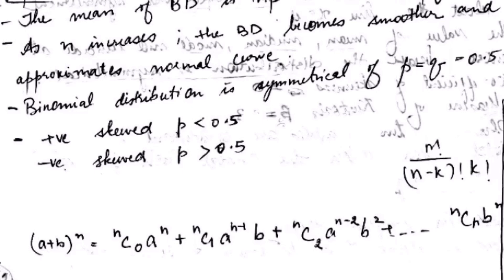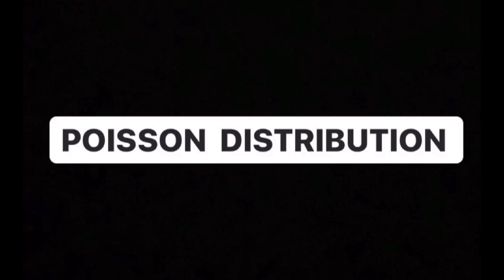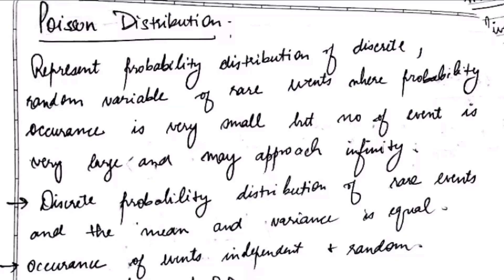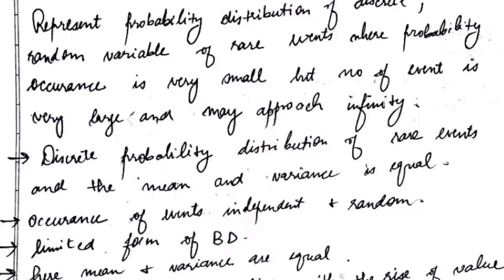Next type of distribution is Poisson distribution. It helps you to predict the probability of certain events from happening when you know how often the event has occurred, and it gives us the probability of the given number of events that has happened in fixed interval of time. That is, it basically represents probability distribution of discrete and random variables of rare events where probability occurrence is very small. When n is very large and p is very small, then np is constant and it tends to Poisson distribution.